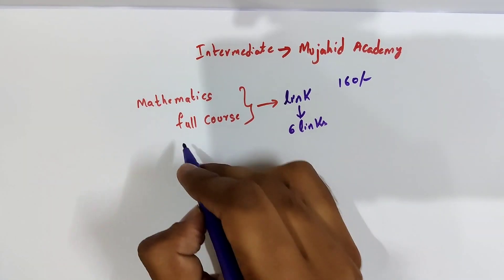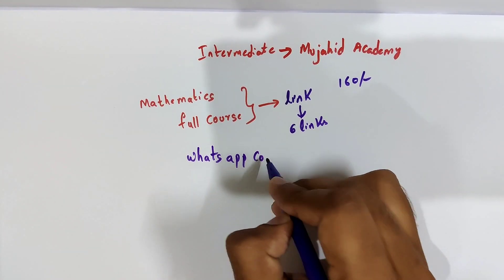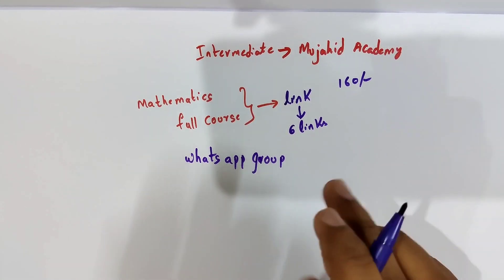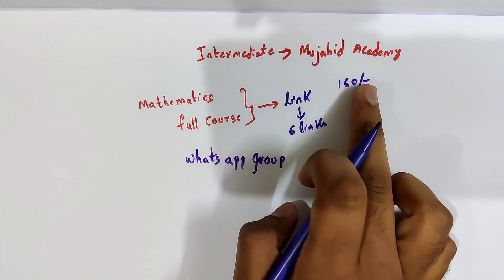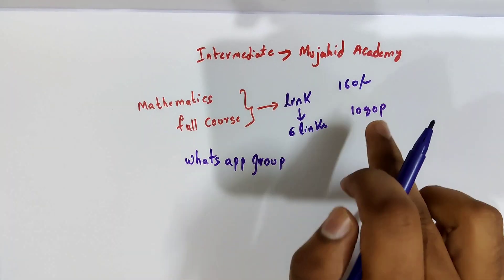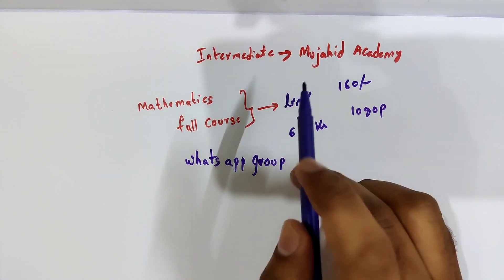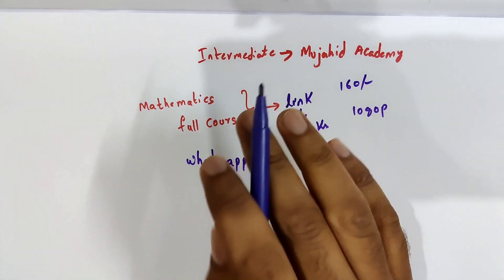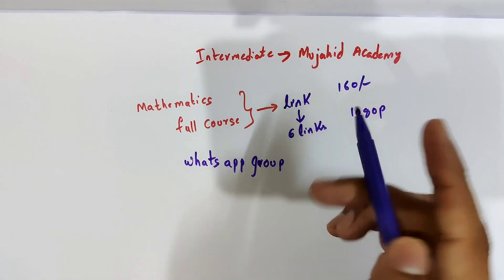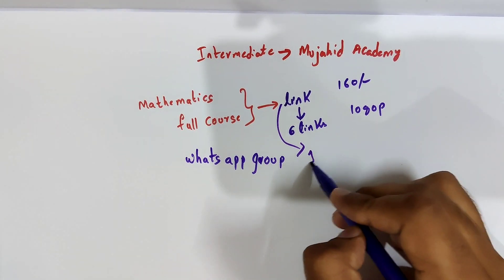The main point is you can join on YouTube only for one month. Videos will be accessible after you join. I will provide you with a link. So I will share six links. I will create a WhatsApp group dedicated to only Maths Full Course.